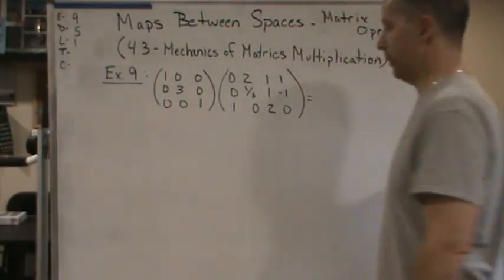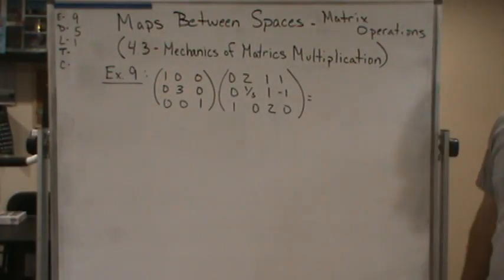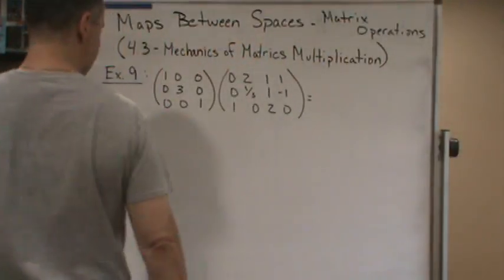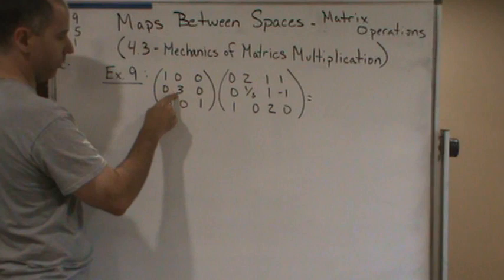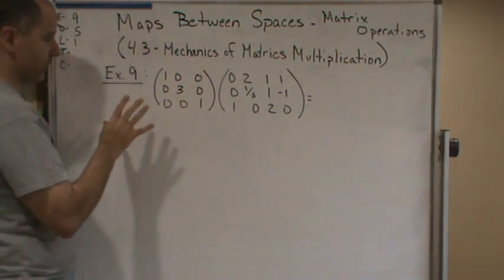Okay, ready? Here we go. Look at what we're doing here. Now think about this one. You've got ones along the diagonal except here. So what is this matrix doing?